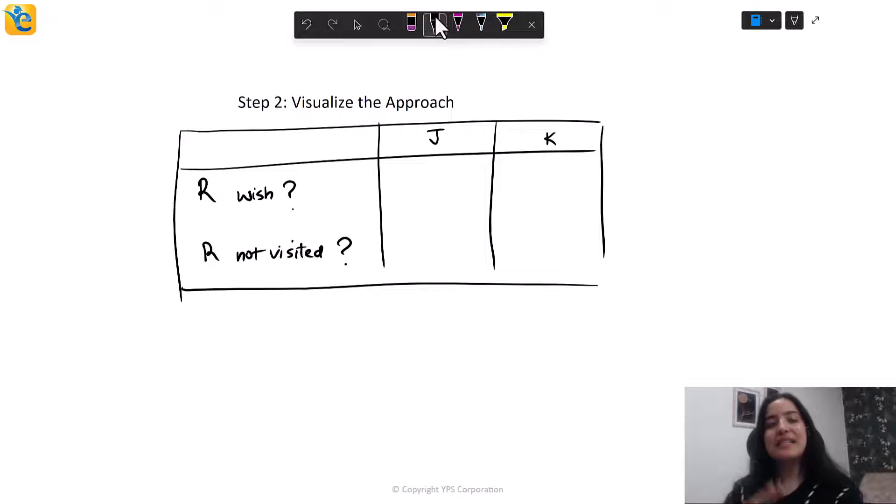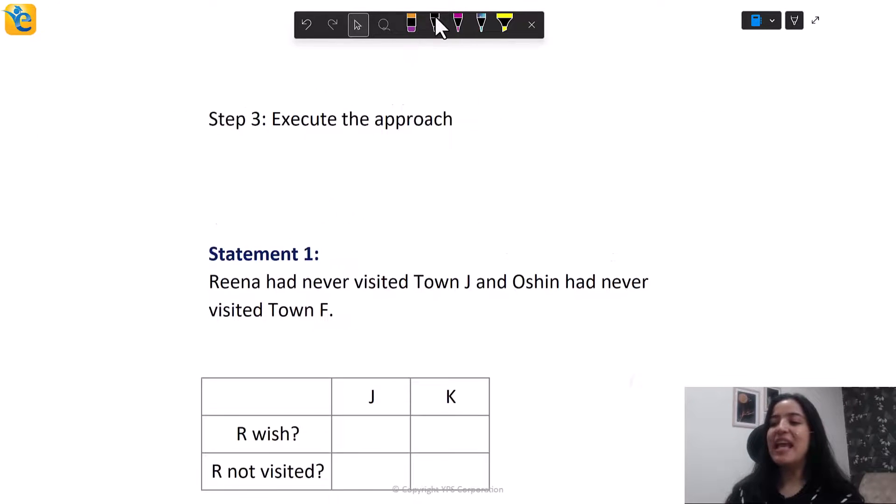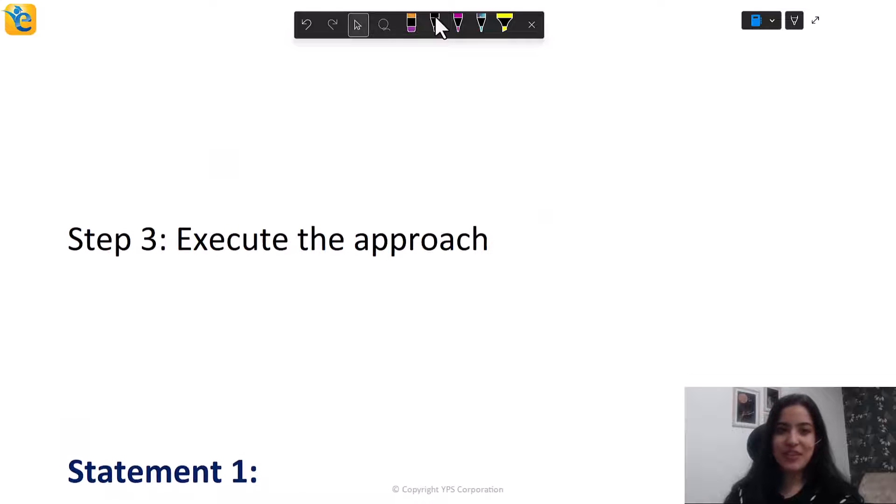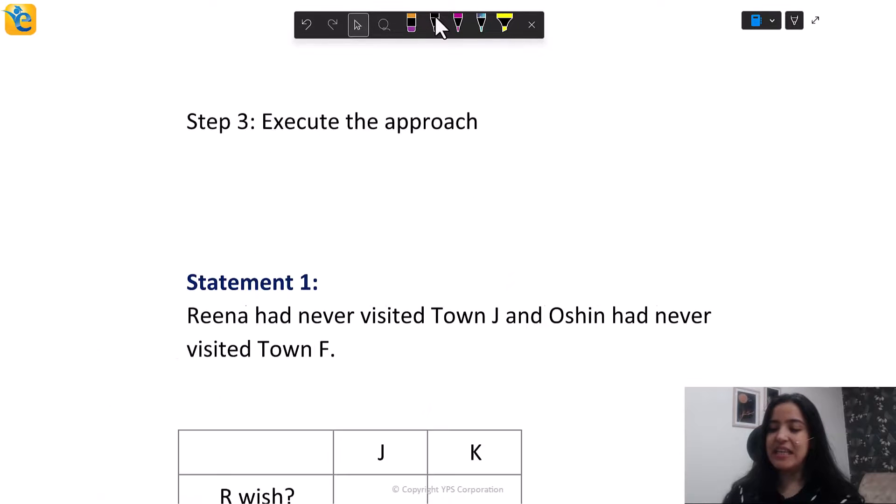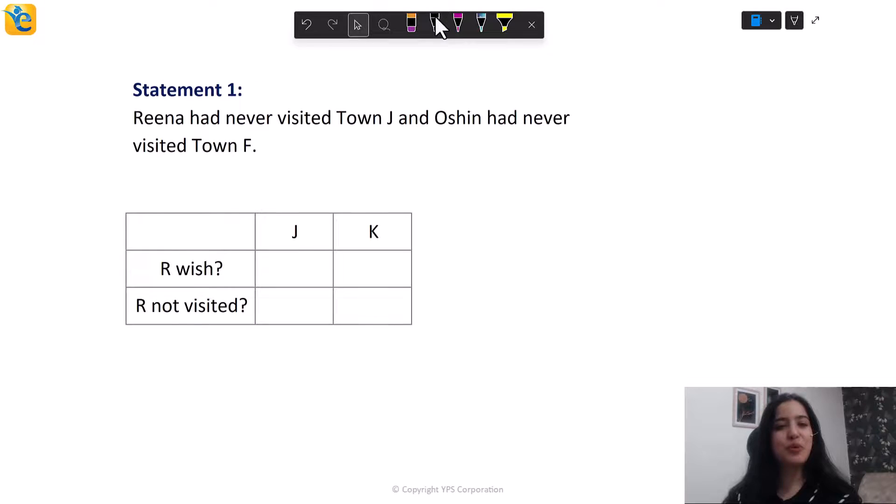You're only talking about R, right? So let's think about R wish and R not visited. These are two answers you want. And you want it for both of the towns. You want it for J and K. So think about this like this table. And you want to find out answers to these two questions for each town. Now, as we assess each statement, if we get a clear answer about R's wishes, R's visiting history, we will be able to answer the question asked. So with this information, we are ready to move to step three. And what is step three? Execute this approach that you have built. And we're going to see this with statement one and this visualization of the approach that we did before.